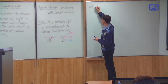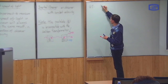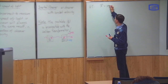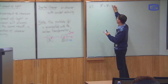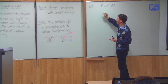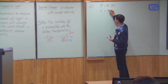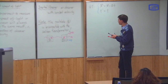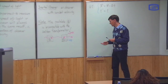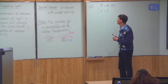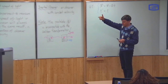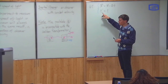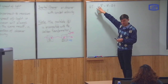The Galilean transformation states: x prime — the position coordinates of the second observer — equals the position coordinates of the first observer minus the relative velocity times the time; and the time measured by the second observer is the same as the time measured by the first. If the postulates of special relativity are true, then this is false — the measurements of space and time by different observers do not transform like this.